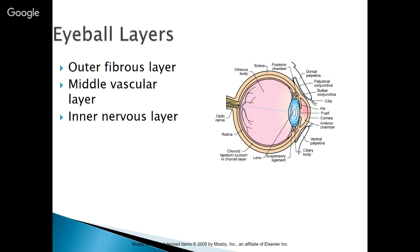Here are the layers of the eyeball. We have an outer fibrous layer — the outer part of the eyeball is fibrous and pretty tough. The sclera is the white part of the back of the eye; if you see the whites of someone's eyes, that is composed of the sclera.